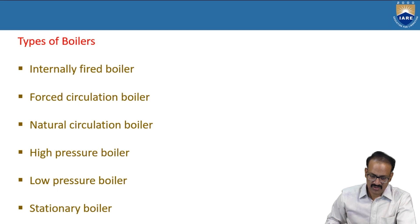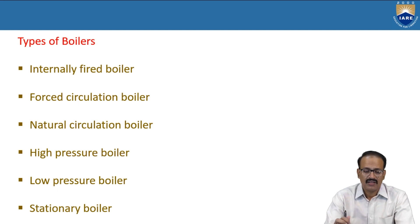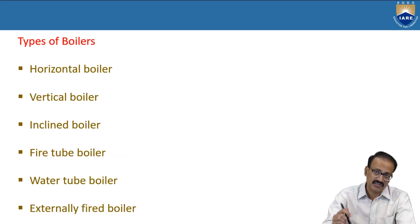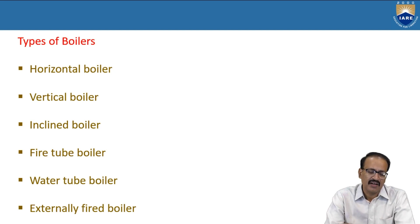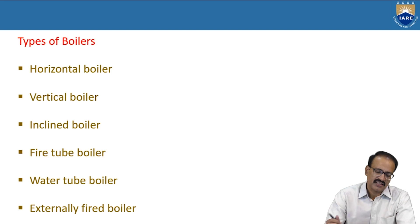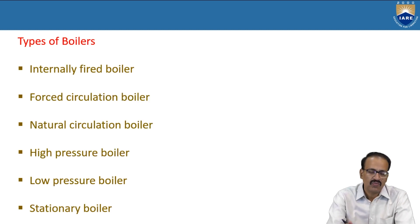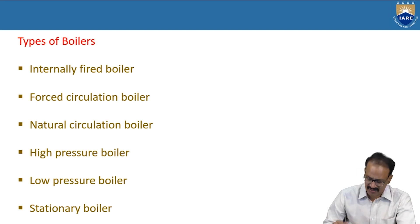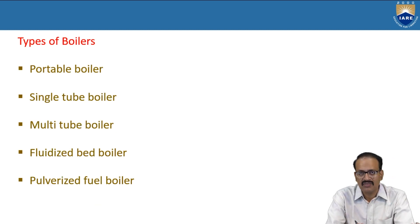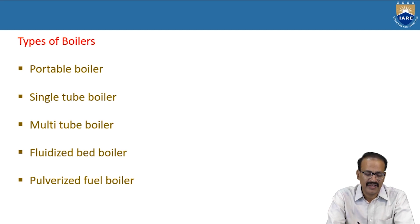To summarize the types again: horizontal, vertical, inclined, fire tube, water tube, externally fired, internally fired, forced circulation, natural circulation, high pressure, low pressure, stationary, portable, single tube, multi tube, fluidized bed boiler, and pulverized bed boiler.